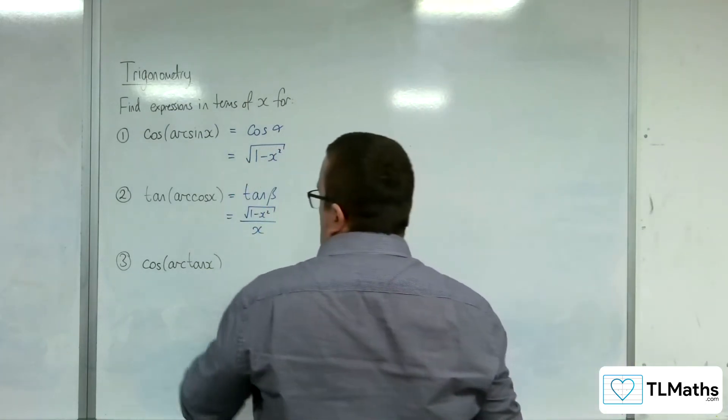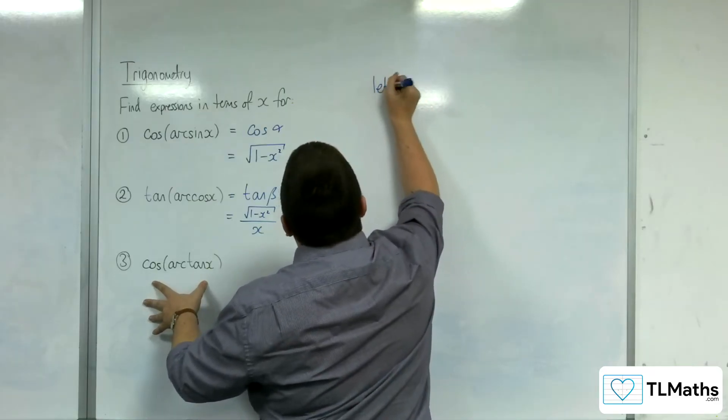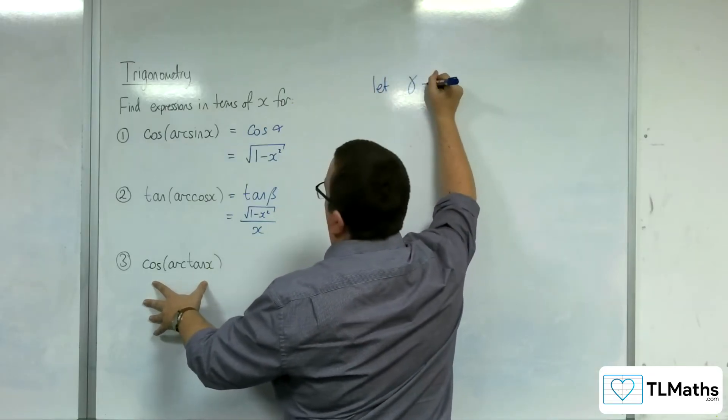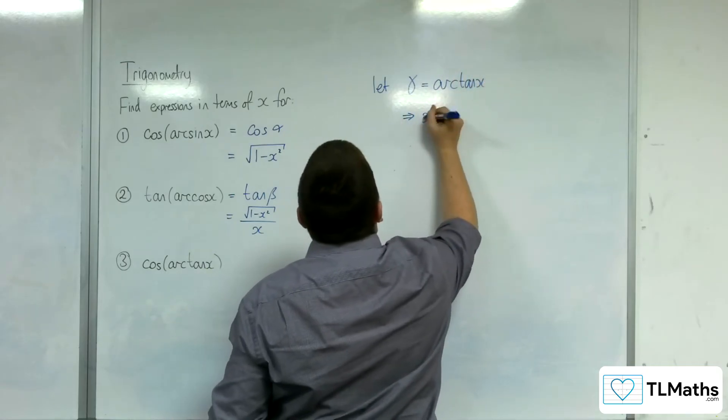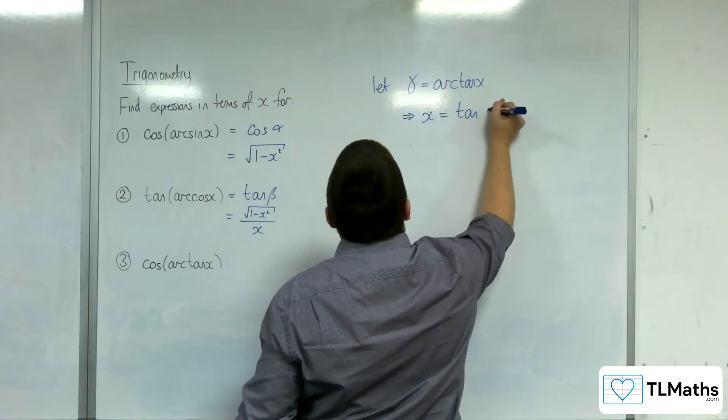So number 3, cosine of arc tan x. Right, so let gamma be arc tan of x. So that means that x is tan of gamma.